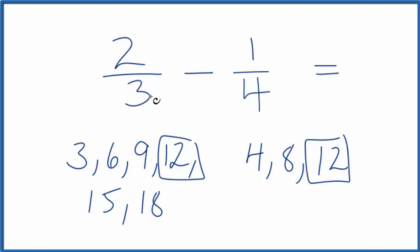So now I could take the 3, 3 times 4, that would give me 12. But I have to multiply the top by 4 as well, because 4 divided by 4 is just 1. So I'm not changing the value, just the way we write it.